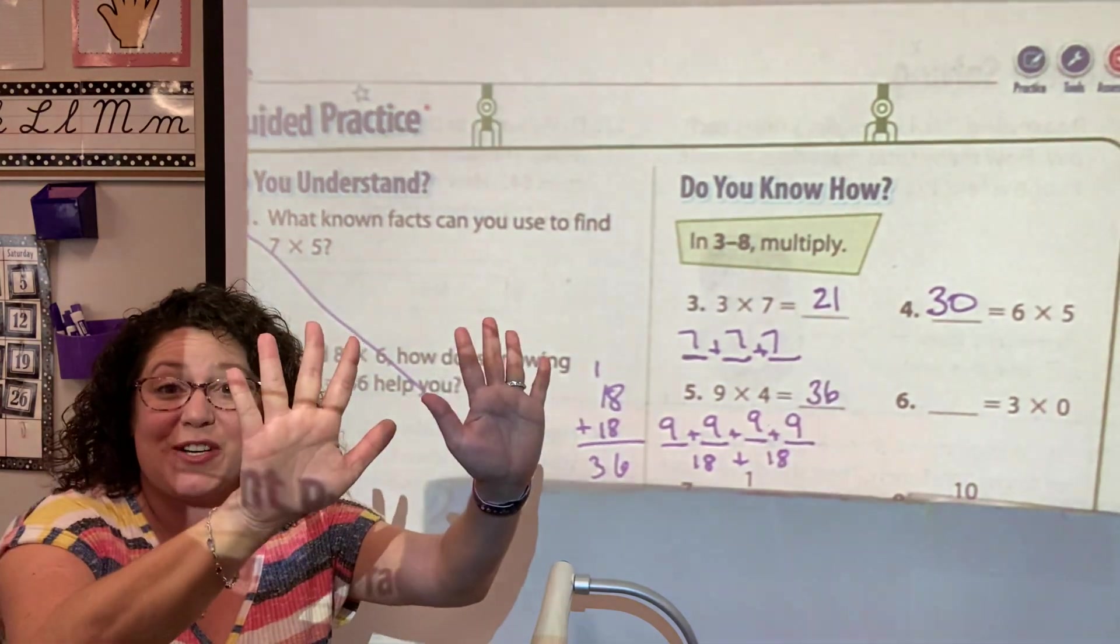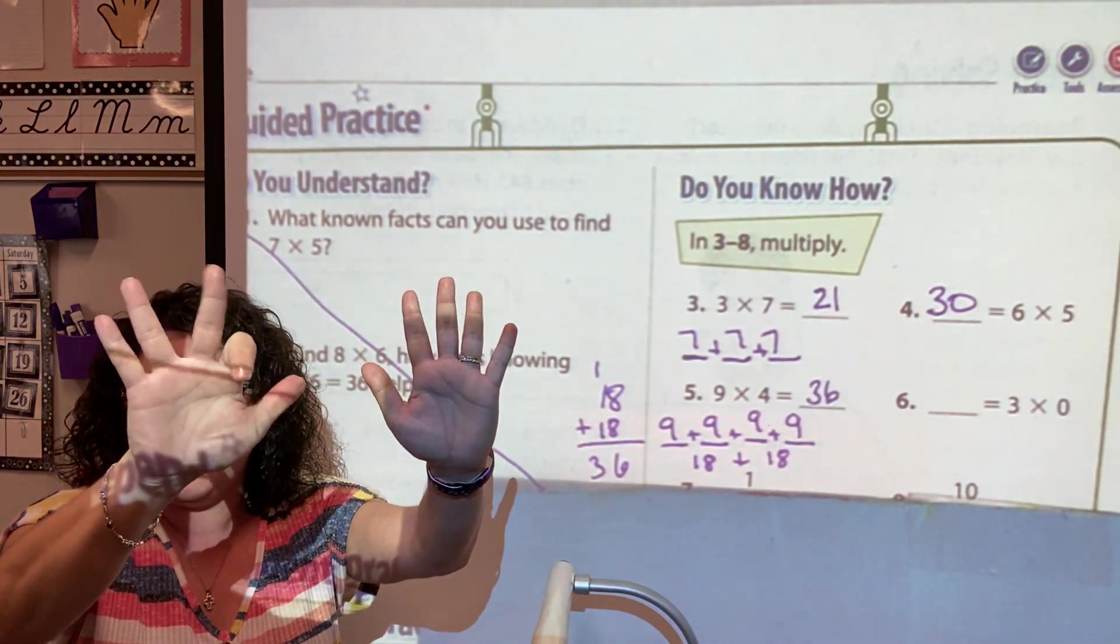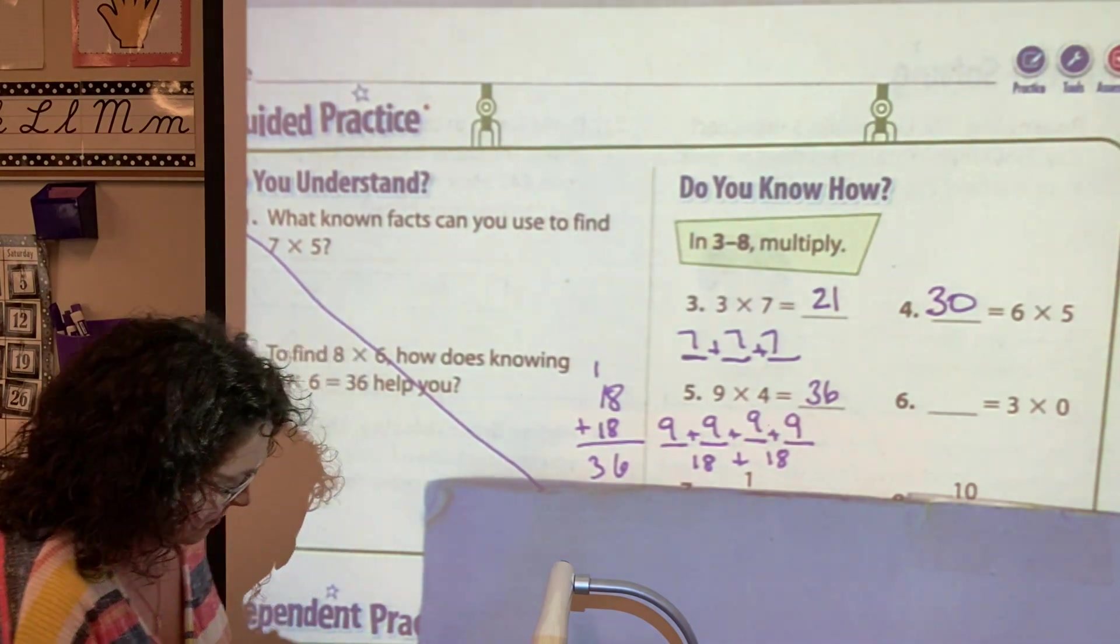I can also do my nines trick. Do you remember that? Nine times four. One, two, three, four. Three tens, six ones.